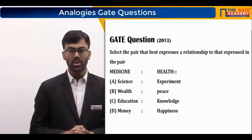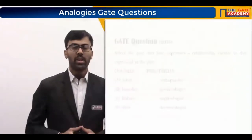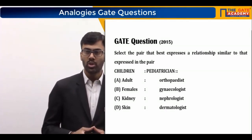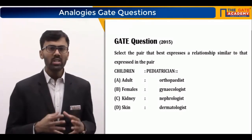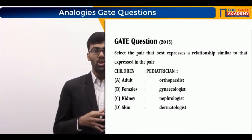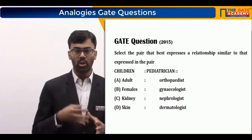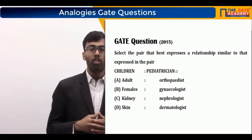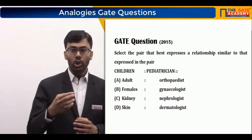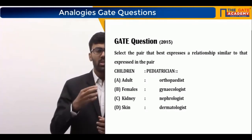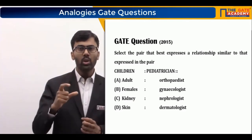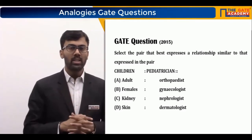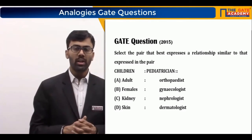This question appeared in GATE 2013. The next question again provides an original pair from which we identify the best matching option. The original pair is 'children : pediatrician.' A pediatrician is simply a children's doctor. Option A is 'adult : orthopedist.' An orthopedist is a doctor who specializes in bones, which is a type of doctor based on a body organ — not on a category of patient.